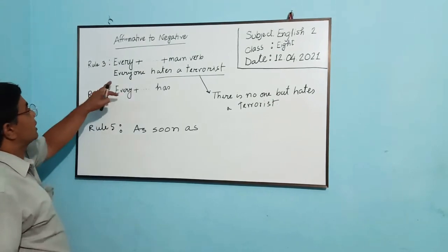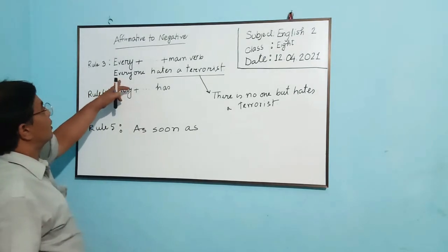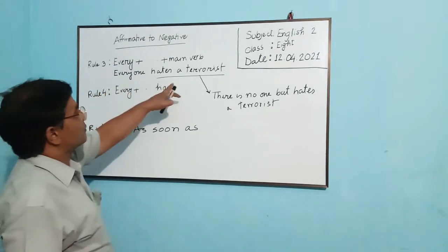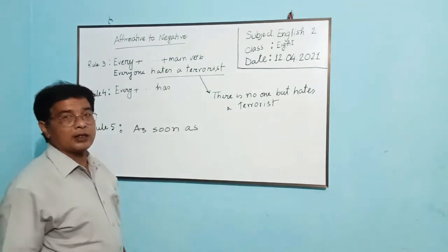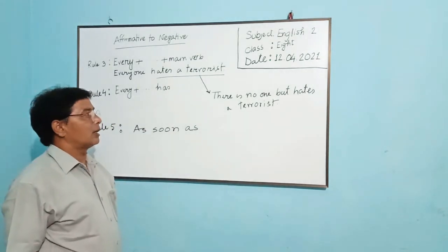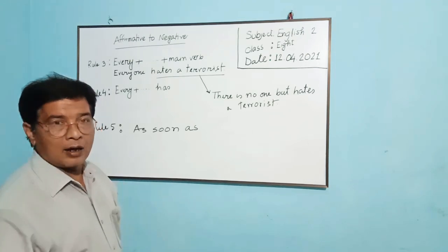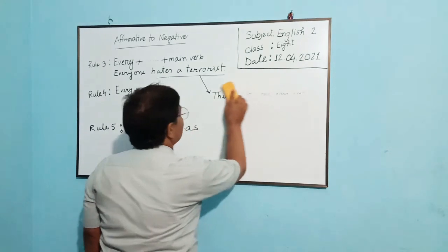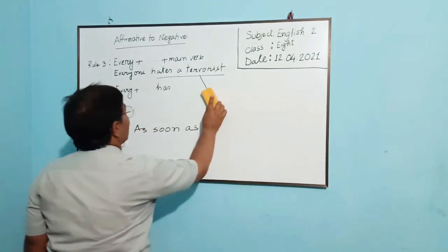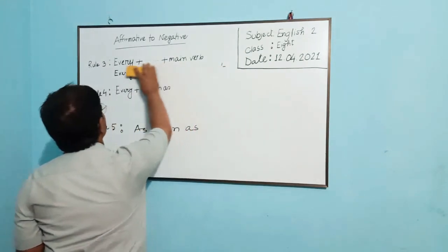If we can give here another example: every mother loves her child. Then the answer will be there is no mother but loves her child. Okay, I think you have it clear. Now we will know another rule.